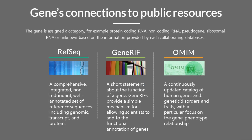The content of Gene is derived from both automated data flows and curation by NCBI staff. The starting point is typically the extraction of gene-specific information from a publicly available, annotated genome sequence. The gene is assigned a category — for example, protein coding RNA, non-coding RNA, pseudogene, ribosomal RNA, or unknown — based on the information provided by each collaborating database.